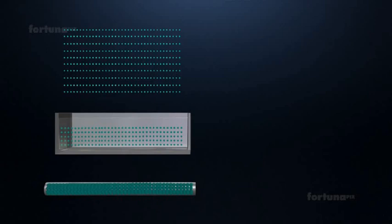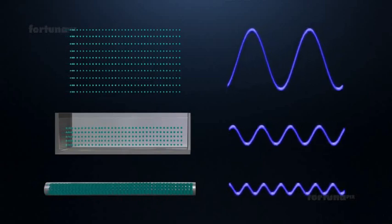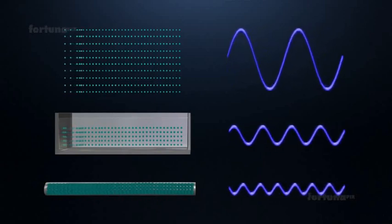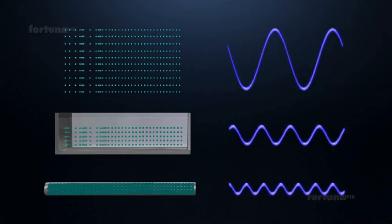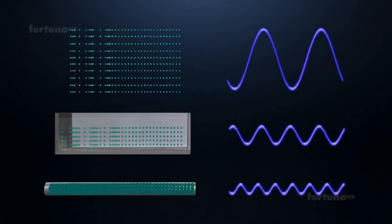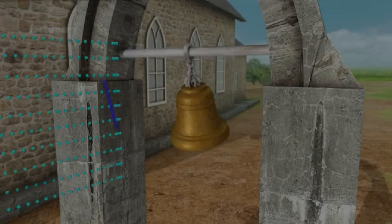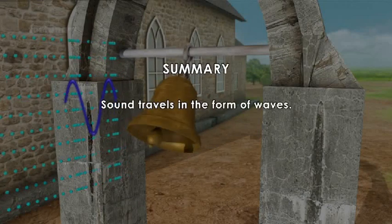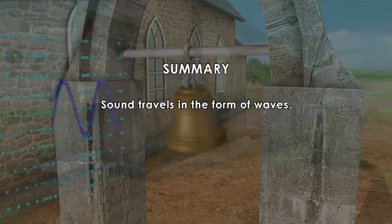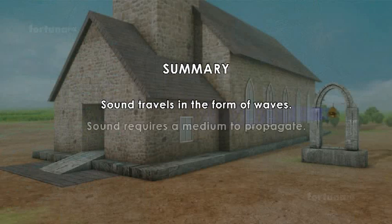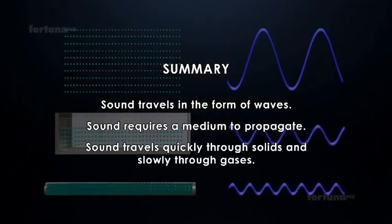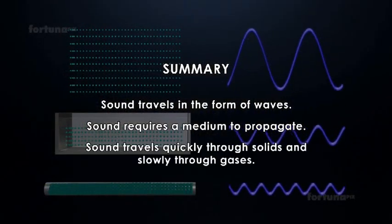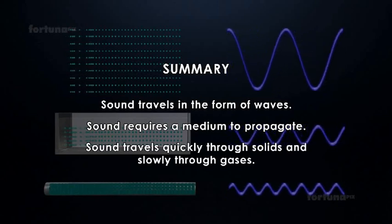Based on the molecular arrangements of different media, sound will travel more slowly through the air and much more quickly through solids. Summary: Sound travels in the form of waves. Sound requires a medium to propagate. Sound travels quickly through solids and slowly through gases.